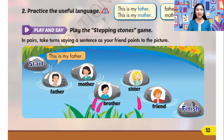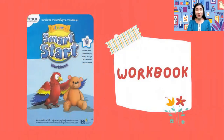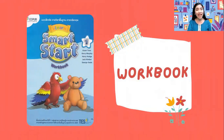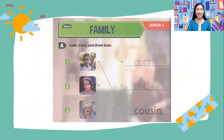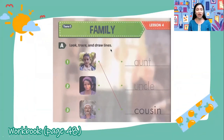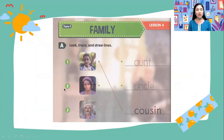Thank you. It's workbook time. Open your workbook on pages 48 and 49. Activity A: look, trace, and draw lines. Example in number one — cousin. Number two to number three, you answer by yourself. But remember, trace also the letters.